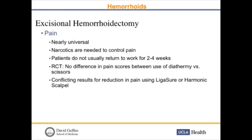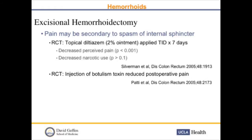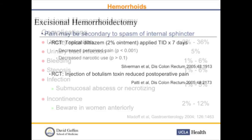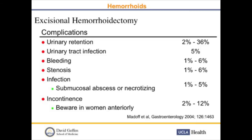There have been a lot of studies looking at what options besides narcotics can help patients recover well, including use of topical diltiazem or injection of Botox. The complications of hemorrhoidectomy include urinary retention, urinary tract infection, bleeding, stenosis, infection, and incontinence.